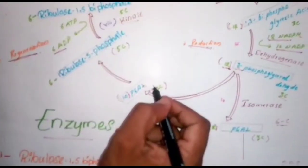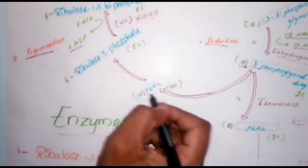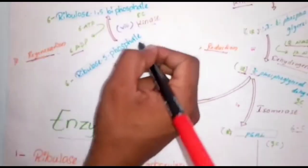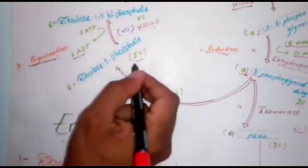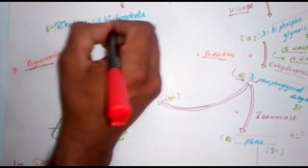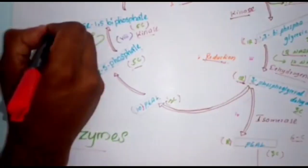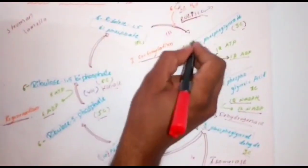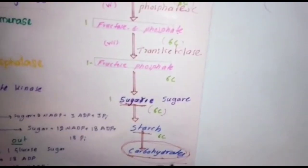The remaining 10 moles of phosphoglyceraldehyde regenerate into ribulose-1,5-bisphosphate. 10 × 3 = 30 carbons are present in those 10 phosphoglyceraldehyde molecules. Each phosphoglyceraldehyde (3C) converts into 1 RuBP (5C) — so 6 RuBP are formed with 30 carbons. These RuBP molecules are ready to combine with one more carbon dioxide from the atmosphere, so the regeneration process continues for the formation of starch.